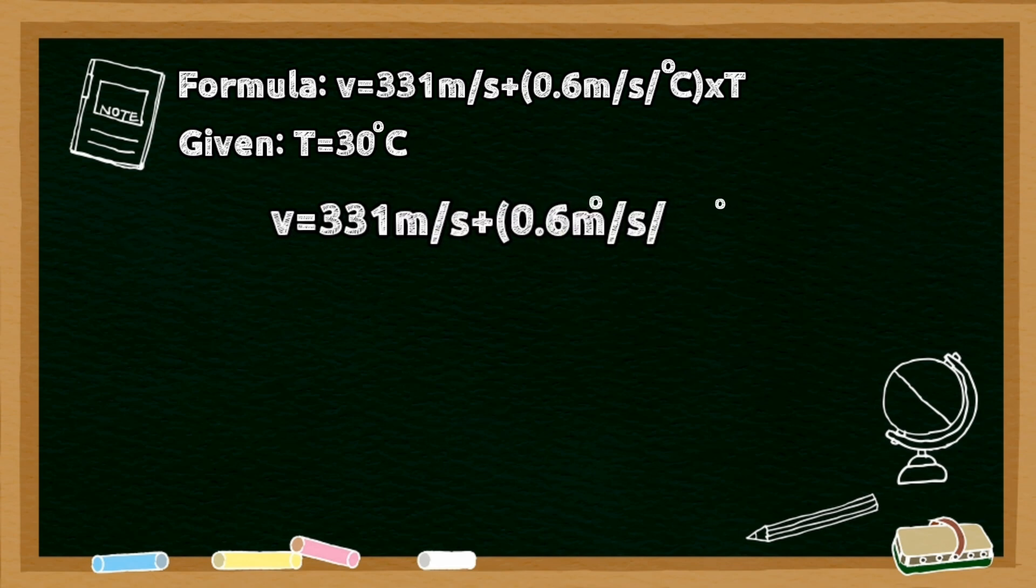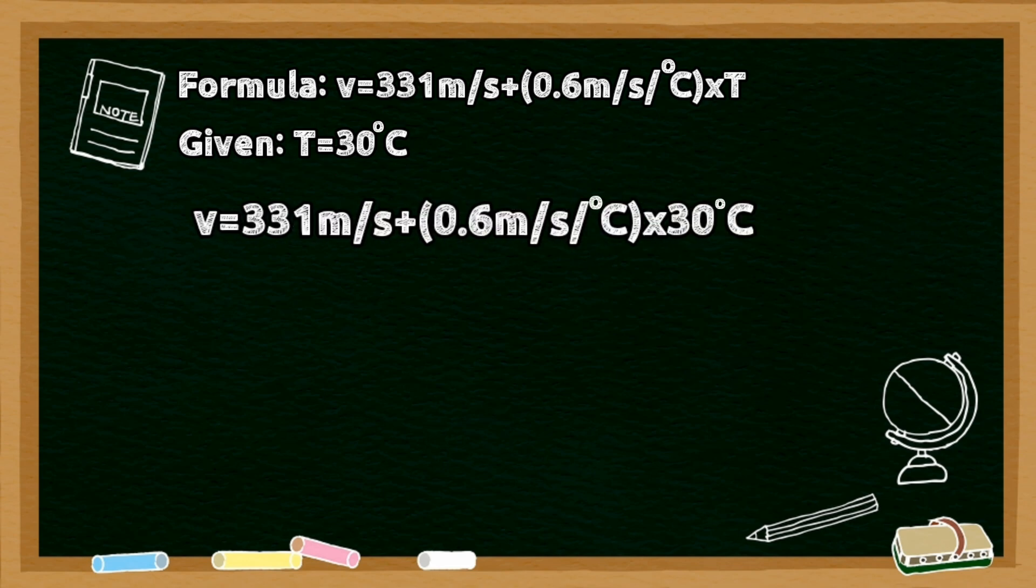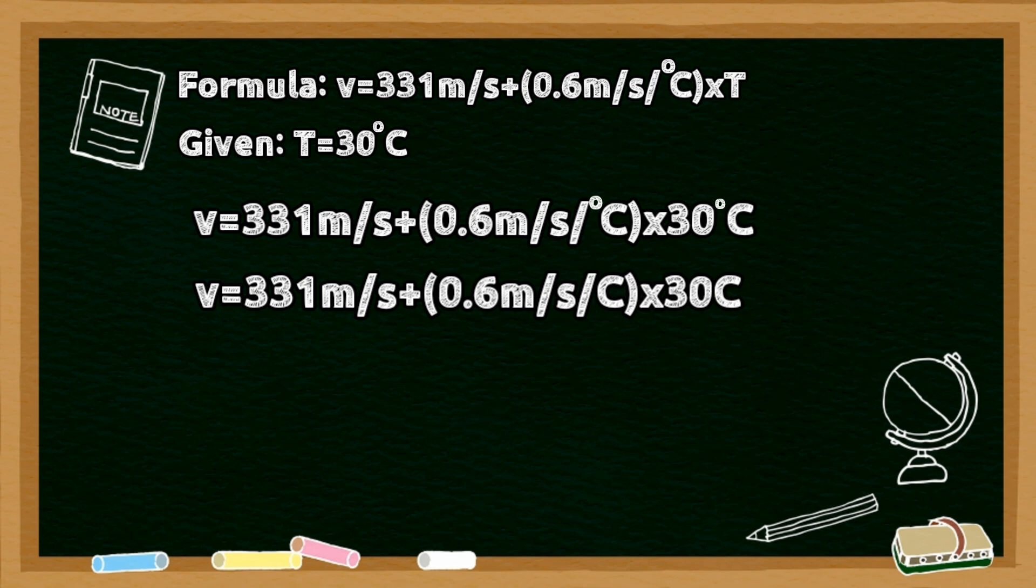Our given is temperature 30 degrees Celsius. Plot in our numbers correctly. And then we need to simplify. Cancel our degree Celsius.